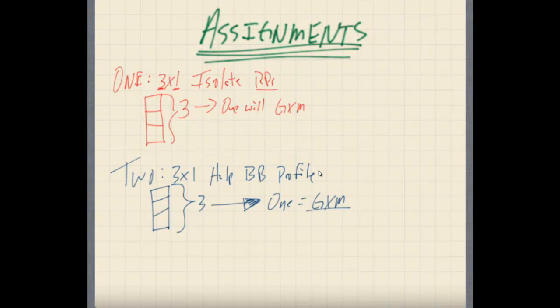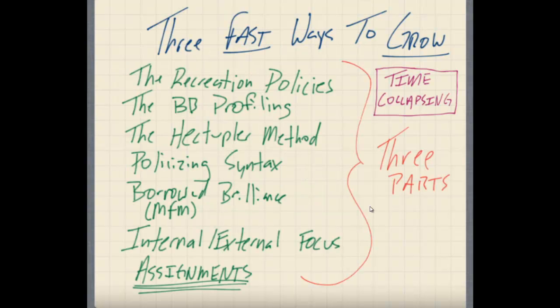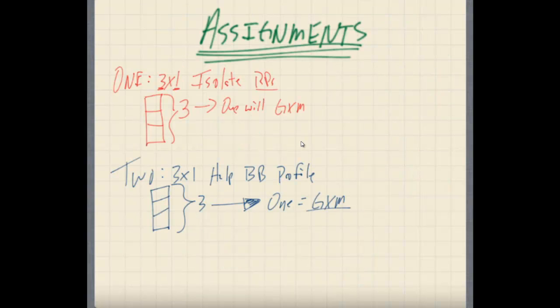Make sense? We're going to do three by one. You're going to help them develop that BB profile and then one of them is going to be your GXM candidate. How many different, we had three, this is a three-part series. How many parts have we gone through? This takes calculus. No, it doesn't. We had three, this is our three-part series. We've gone over the recreation policies. Boom. Done. We've gone over the BB profile and we just did it. Boom. Done. Now we've got the Hecstoupler method. That's going to be next. But we're coming back to our assignment. This is the assignment now. Help them put that BB profile in place. Let us know how it goes and we'll see you back here for the third and final part. See you soon.